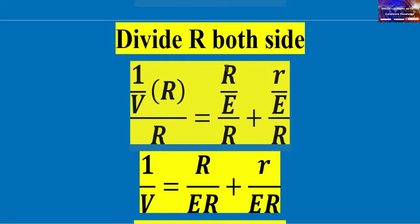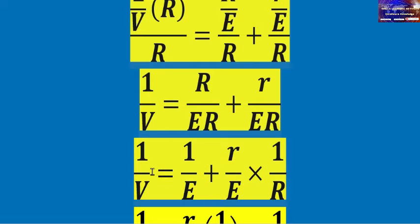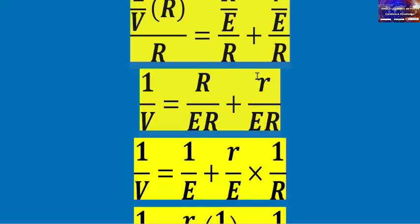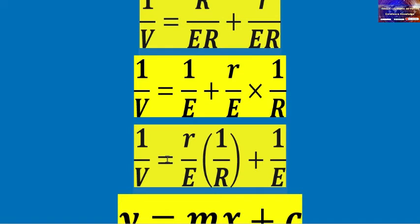After simplification, the general equation is: 1 over V equals (r over EMF) times (1 over R) plus 1 over EMF. This is the important equation that relates to the nature of our graph.